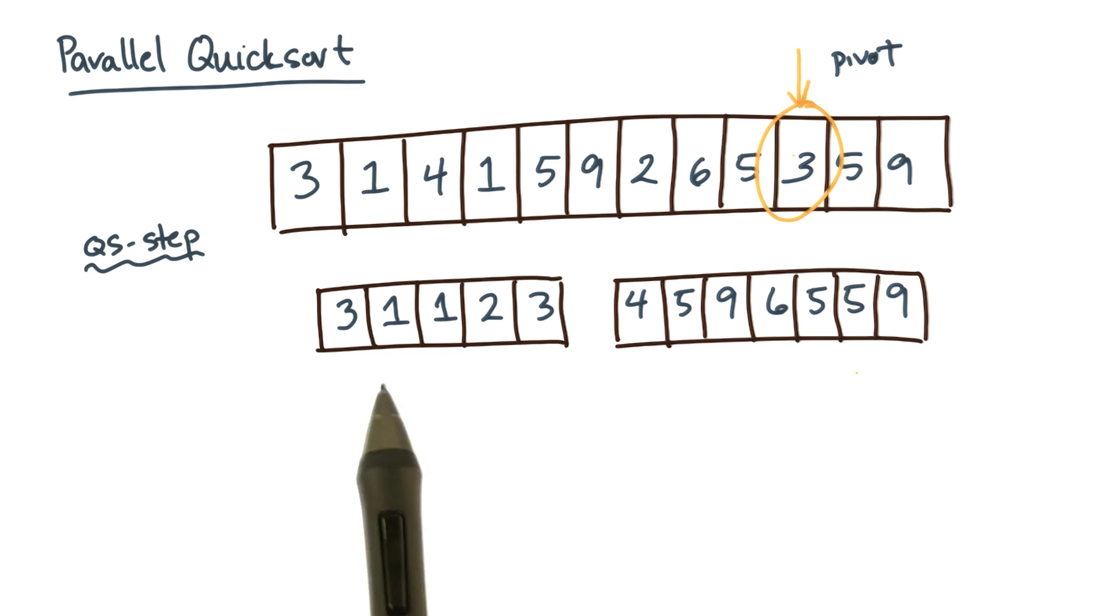By doing so, you now have two sub-parts of the array that can be sorted completely independently from one another. That ends the quick step.